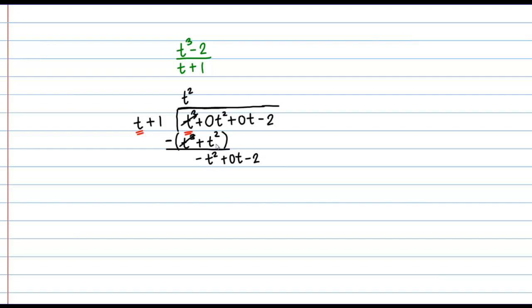I'm going to be looking now at this new line. Here negative t squared plus 0 t minus 2. Once again this t plus 1 that's outside the division sign. Here I'm going to be asking myself how many times does t go into negative t squared? Or what do I need to multiply by to get negative t squared? Here the answer to that question is negative t. T times negative t gives me negative t squared.